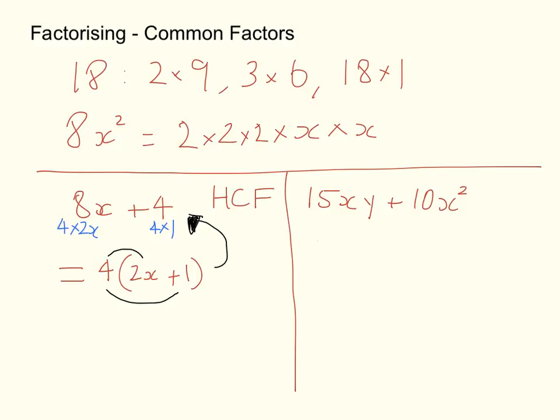I'm going to look straight away and say that I've got 5 times 3 times x times y, and then I've got 5 times 2 times x times x. Now they share a couple of common factors there. The first one being this 5. They both share that 5, and they also both share this x here.